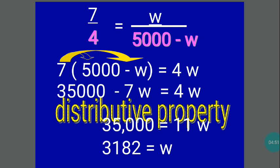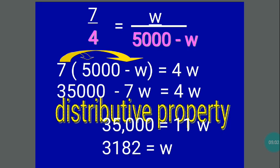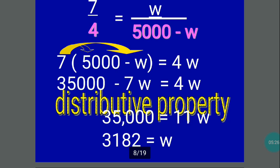Then you combine like terms. You retain 35,000; transpose negative 7w using the addition property of equality. So you have 4w plus 7w, which is equal to 11w. Then 35,000 is equal to 11w. Divide both sides by 11, and you get the value of your variable w, which is 3,182.